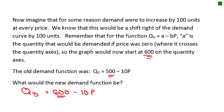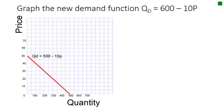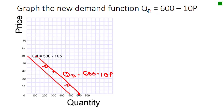To graph this new function, we could do a table of values, find intercepts, or shift the original graph right by 100 units. Taking two points and shifting them over by 100, drawing the new curve parallel to the original, we label it QD = 600 - 10p. At every price point — at $50, at $30 — we're now demanding 100 more units.